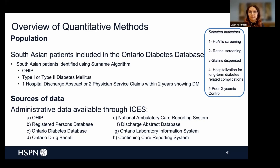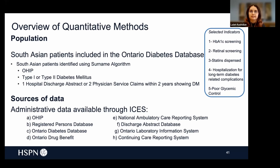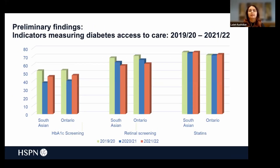We looked at five specific indicators, visible in the blue rectangle on the right. For those familiar with the HSP and diabetes report, these are similar indicators. The top three indicators are related to diabetes access to care and management: the proportion of patients up to date on HbA1c screening, up to date on retinal screening, and the proportion of patients with diabetes over age 65 that have had statins dispensed within the past year. Indicators four and five are outcome indicators related to adverse diabetes outcomes, covering hospitalization for long-term diabetes-related complications and the proportion of patients with poor glycemic control. We looked at data across three years from 2019 to 2022, comparing trends in the South Asian subgroup to the Ontario average as a whole.